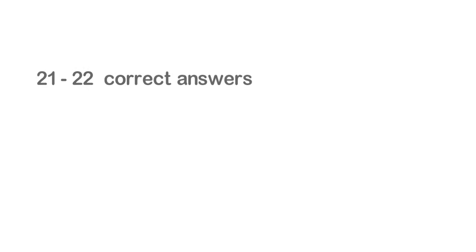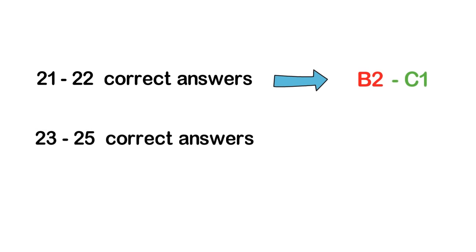With 21 and 22 correct answers, you're probably a B2 or C1 learner. With 23 to 25 right answers, you're between C1 and C2, the most advanced level in this framework of reference.